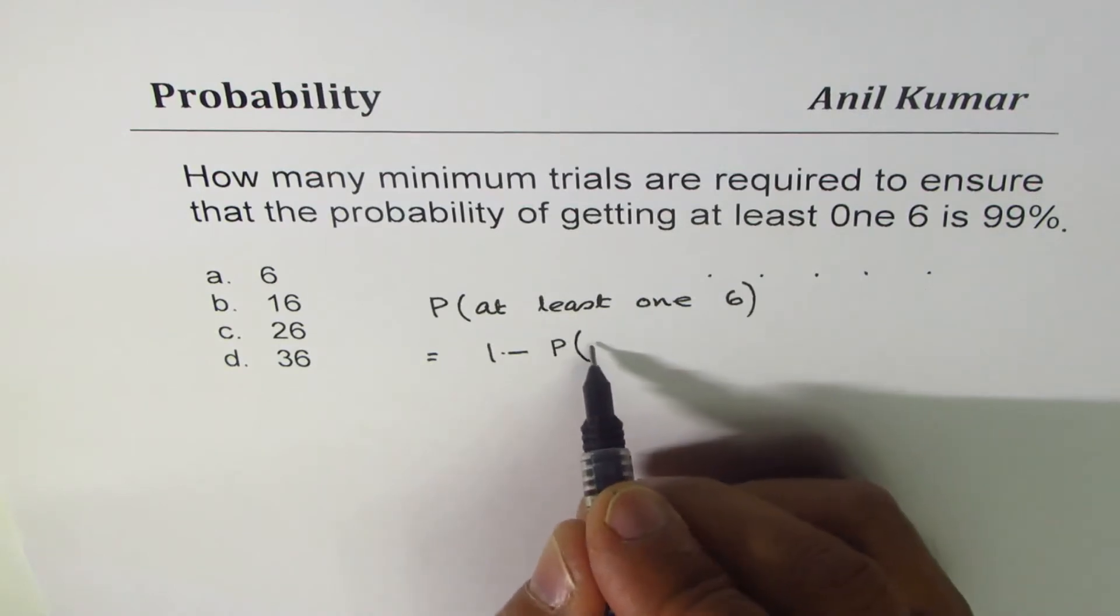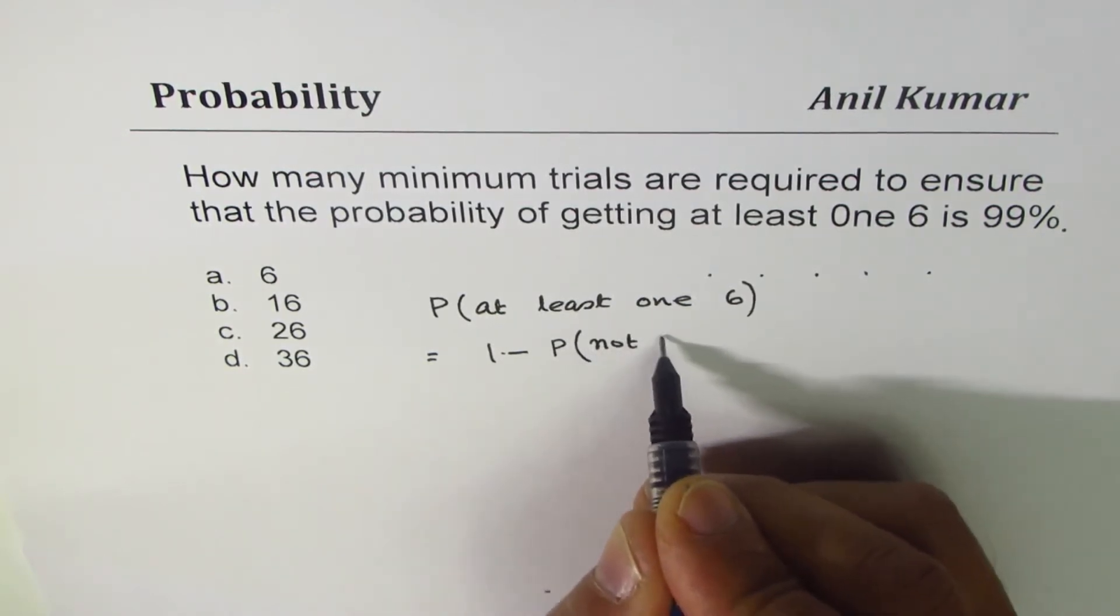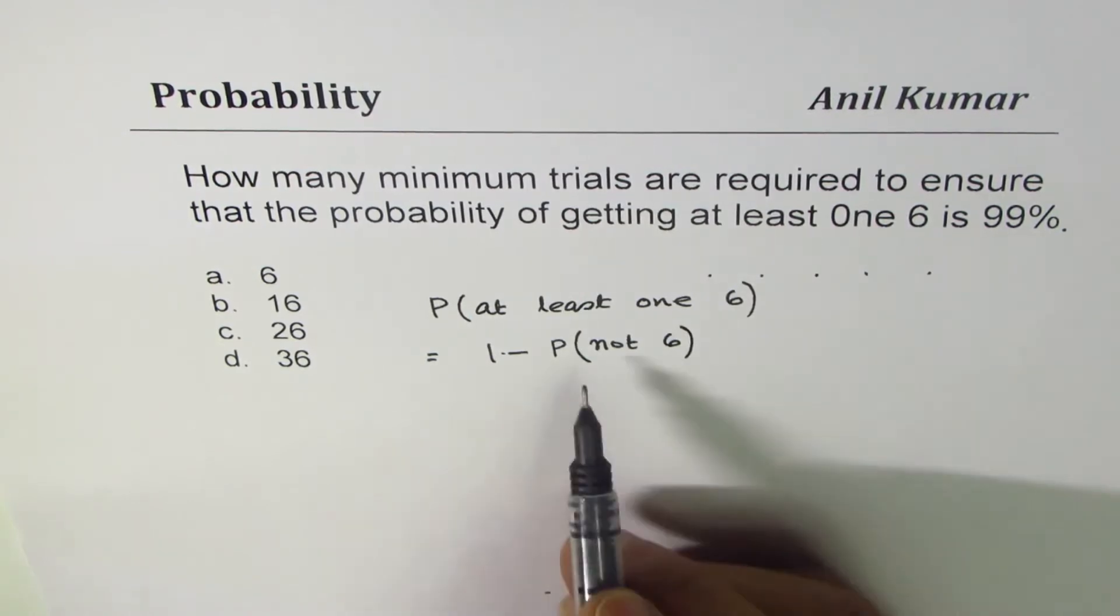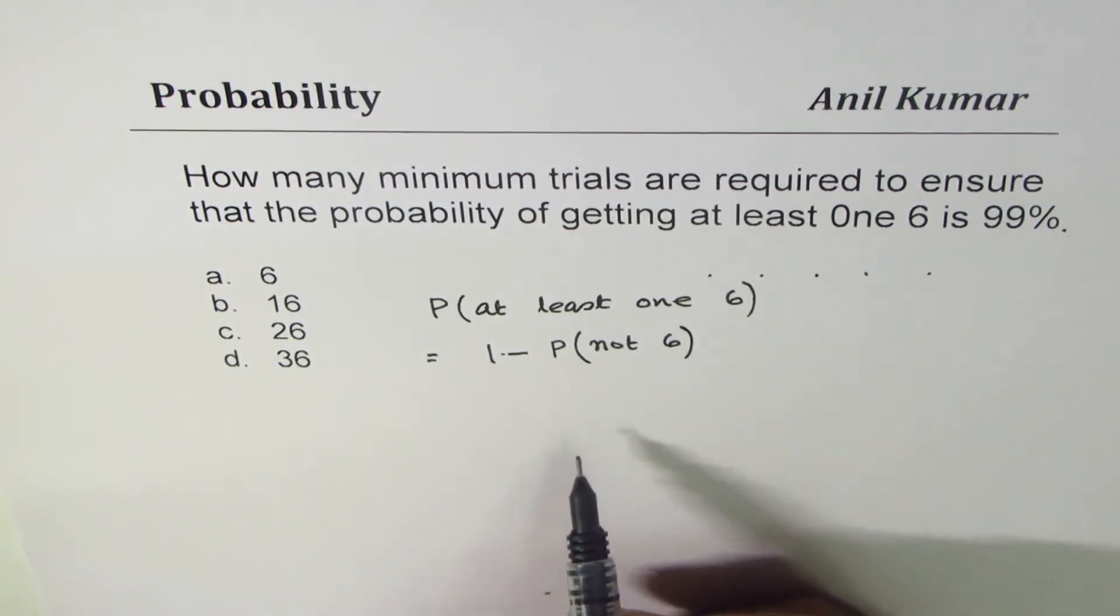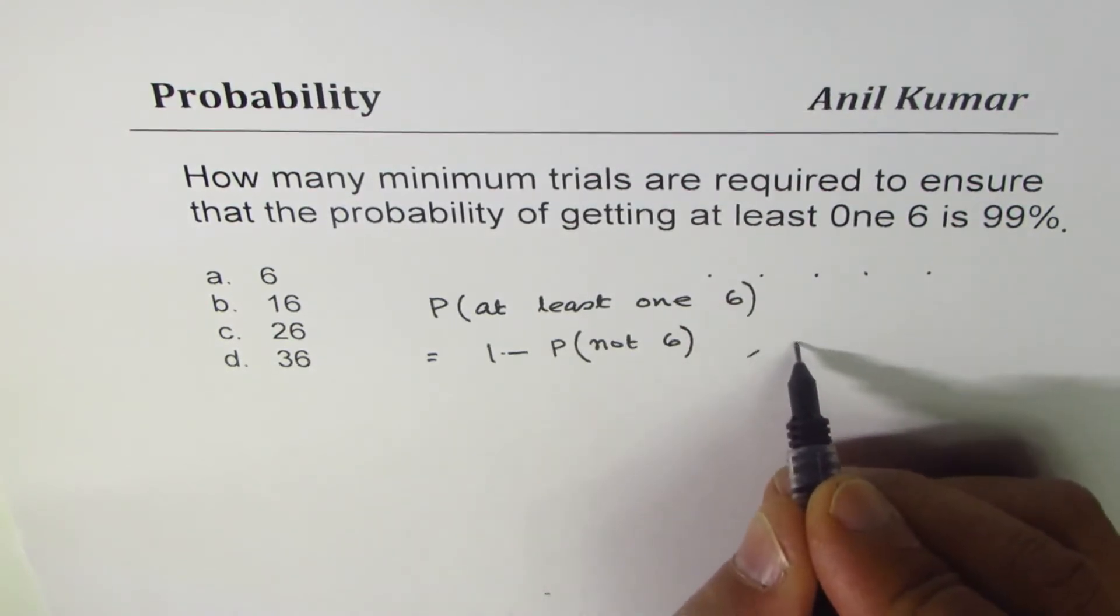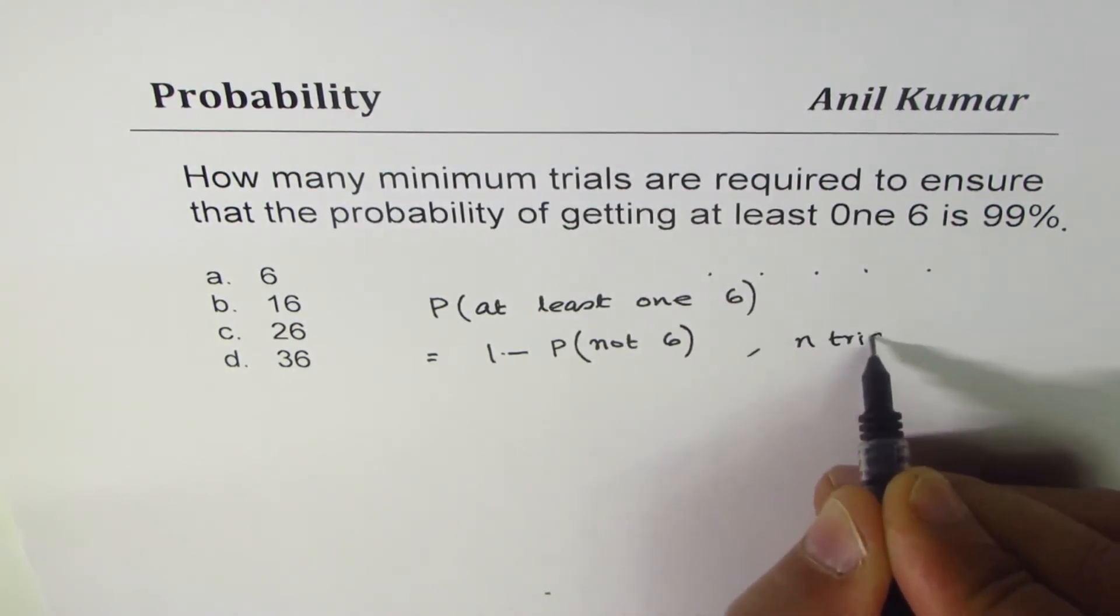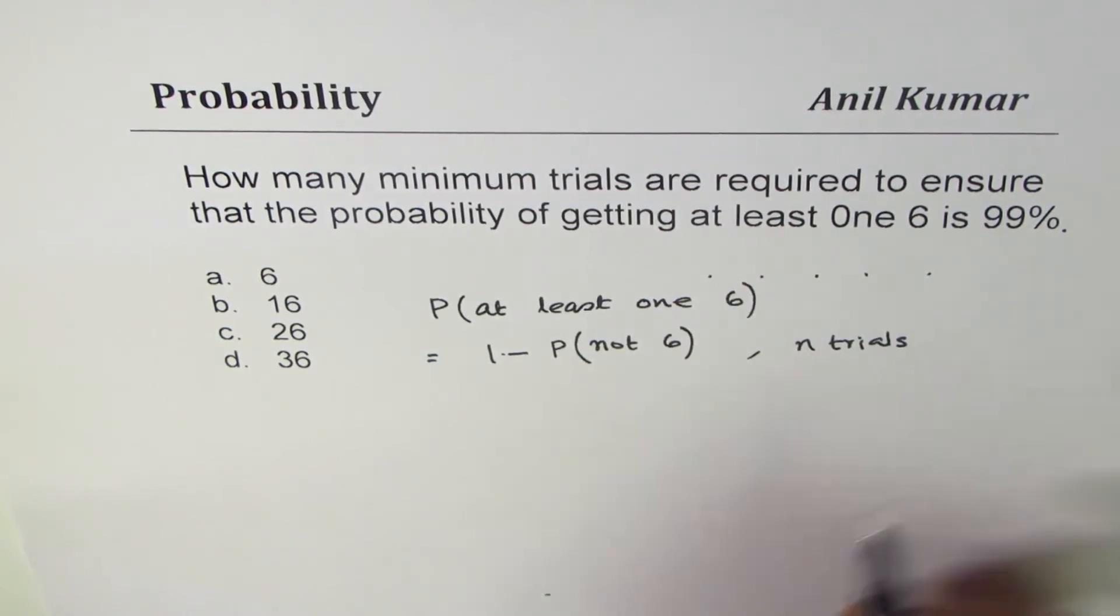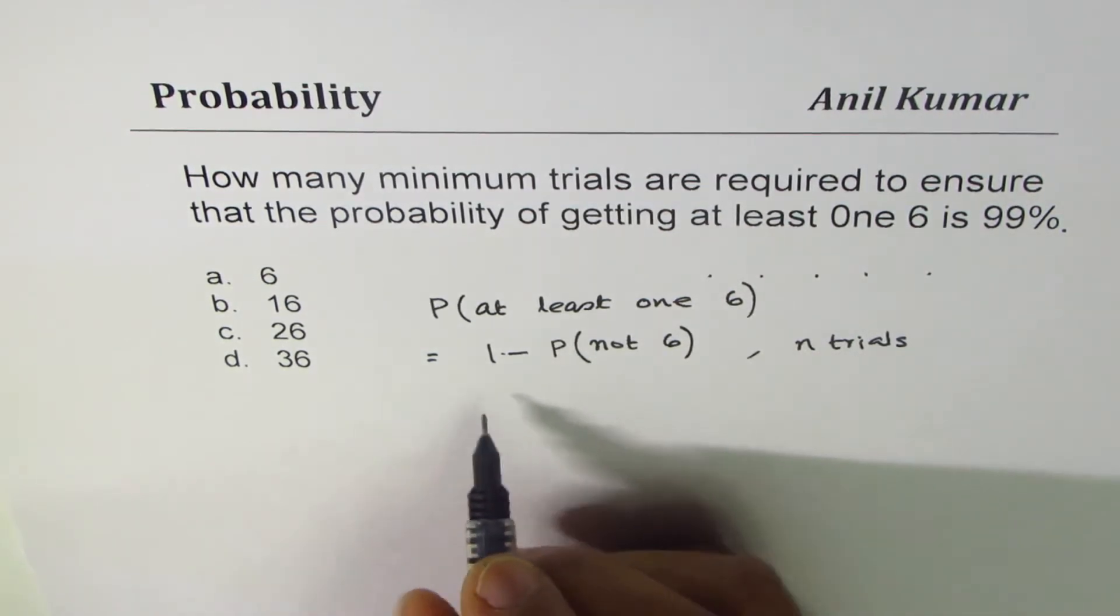Probability of not six in n number of trials. So this is in one trial. Now if there are n trials, then the probability gets multiplied.